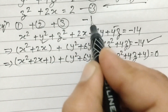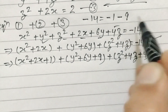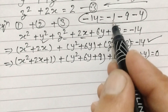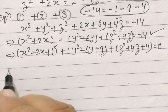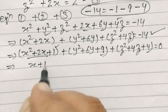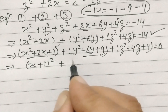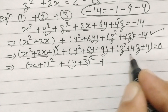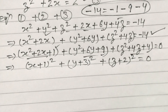Here we break minus 14 as minus 1, minus 9, and minus 4. So this 1, 9, and 4 come in. So this can be written as (x plus 1) whole squared plus (y plus 3) whole squared plus (z plus 2) whole squared is equal to 0.